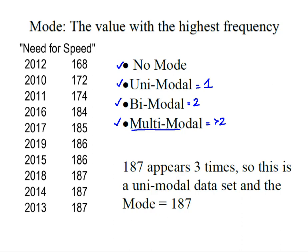So in order to determine the mode for my speeds, I'm simply going to go through and I'm going to see how often everything repeats. And so these are all single. 186 appears two times, but 187 appears three times. And so since 187 appears three times, we have a unimodal data set and the mode is 187.